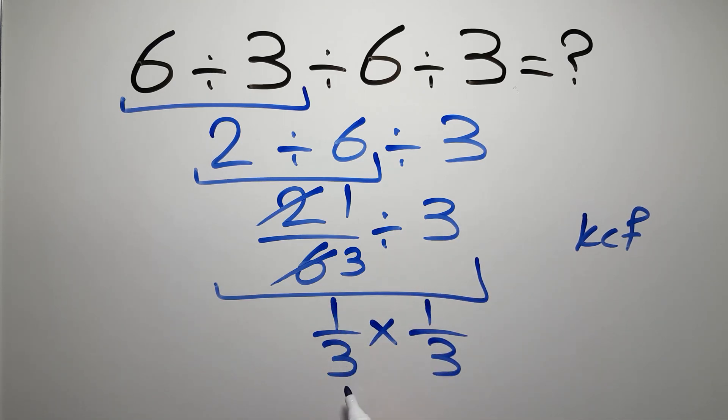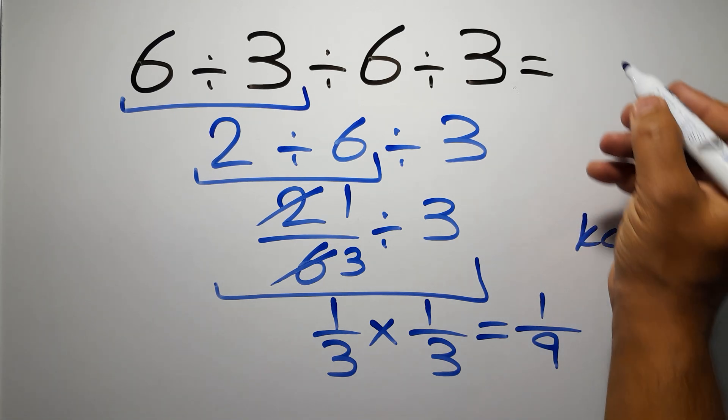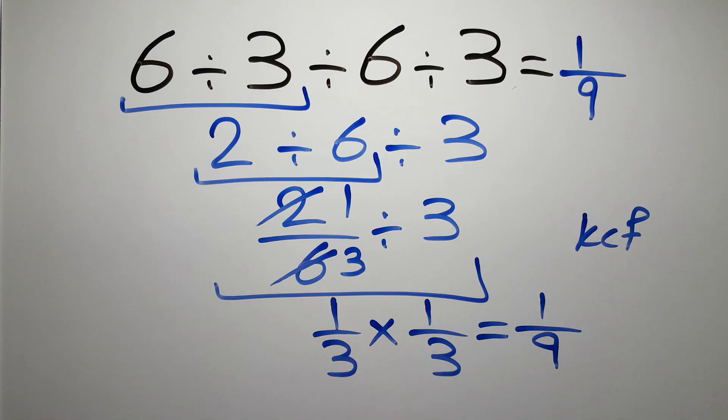So 1 over 3 times 1 over 3, which equals 1 over 3 times 3 gives us 9. So 1 over 9, and this is our final answer to this problem. The correct answer is 1 over 9.